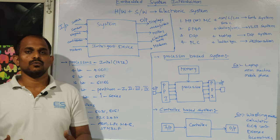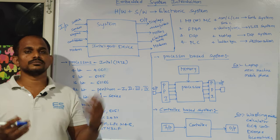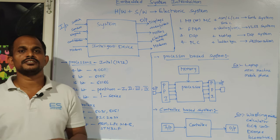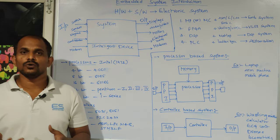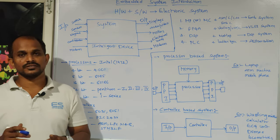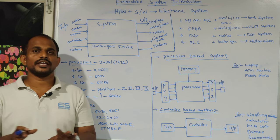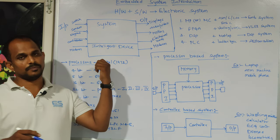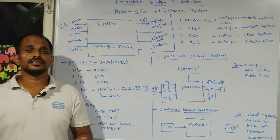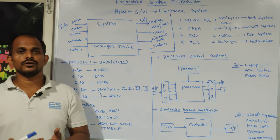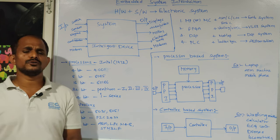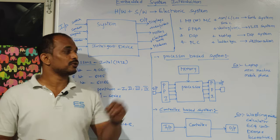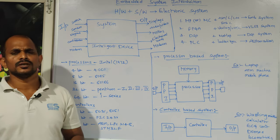The program or code you write will be executed only by the intelligent device. Resistors or capacitors do not execute your instructions — only the intelligent device does. Intelligent devices from the engineering side include microprocessors, microcontrollers, and digital signal processors. You studied these in engineering, but you need to use them for application purposes through your program, and that will make your product.